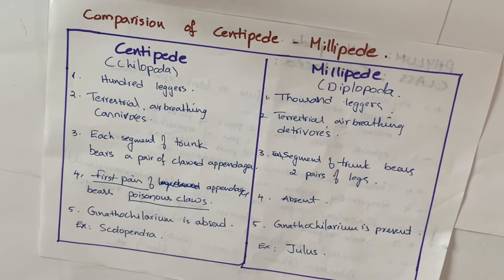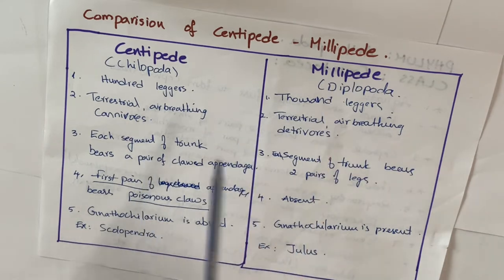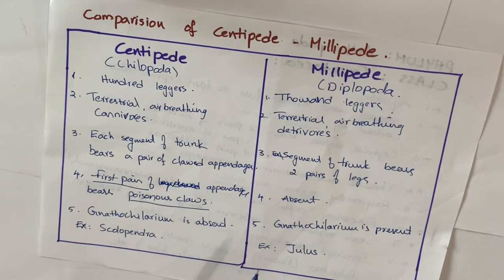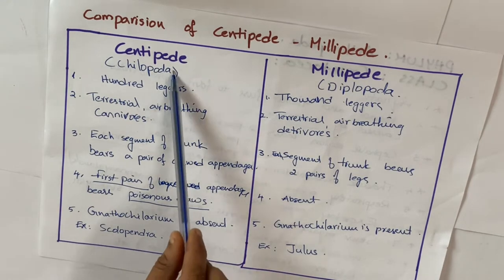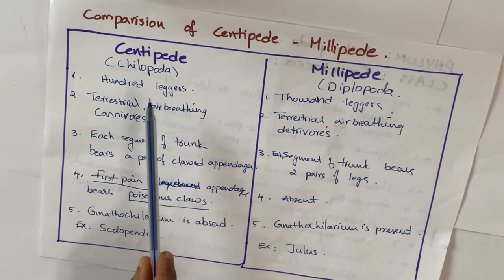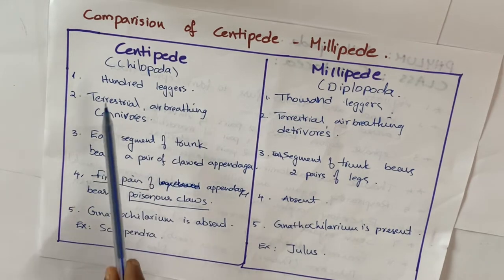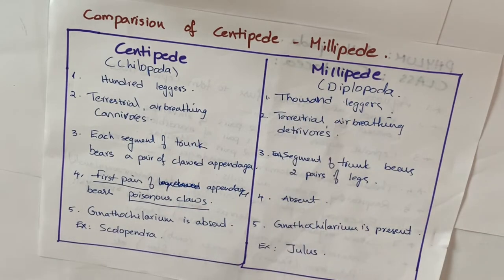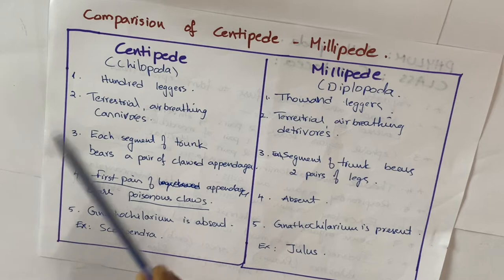Welcome students. Today we'll learn an interesting topic regarding the Arthropoda phylum — the two classes: centipedes and millipedes. This comparison is very important for board examinations. Century means hundred, so centipede means hundred legs, and millipede means thousand legs.